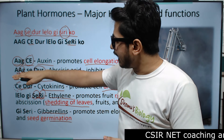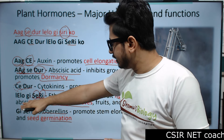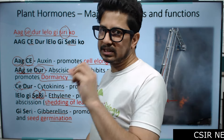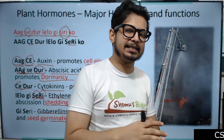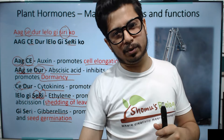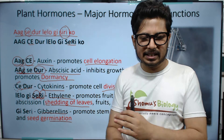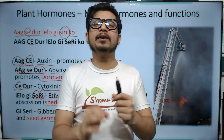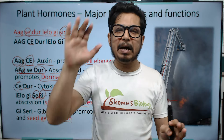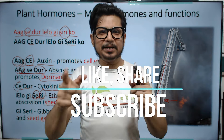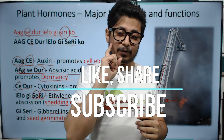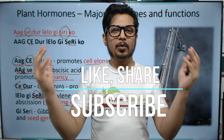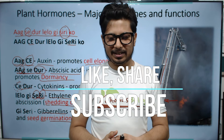So here are the five major plant hormones and their functions: Auxin, Abscisic acid, Cytokinin, Ethylene, and Gibberellins — all under one single sentence: 'Aag Se Door Le Lo, Ji CD Ko'. If you remember this, you will remember the names and functions of the plant hormones and never forget them. If you like this video, please hit the like button, share with your friends, and subscribe to this channel for more videos. Thank you, bye.